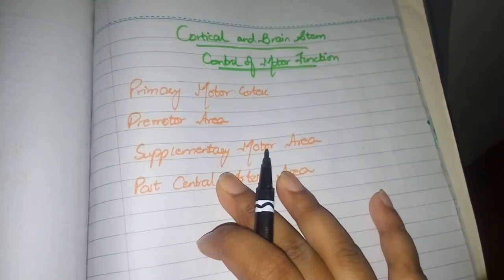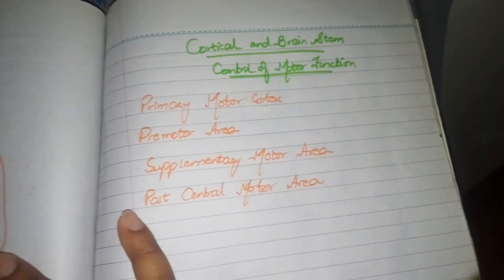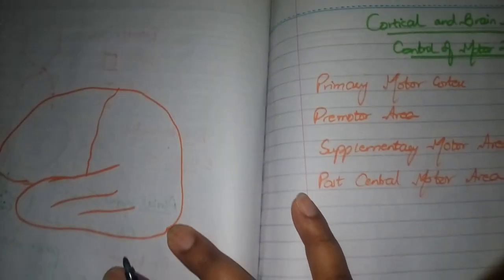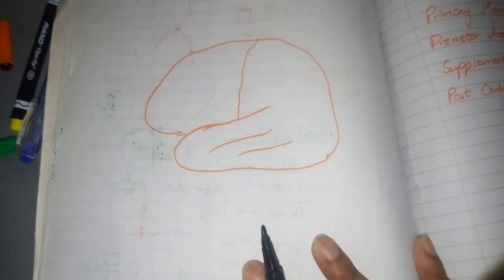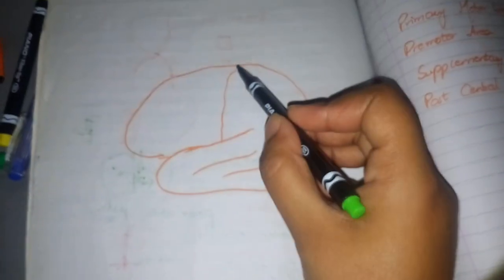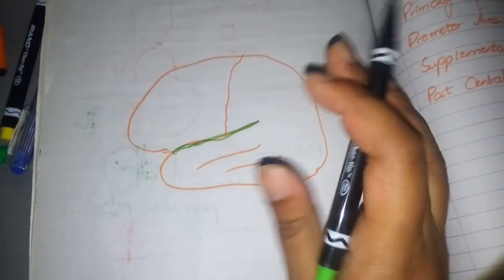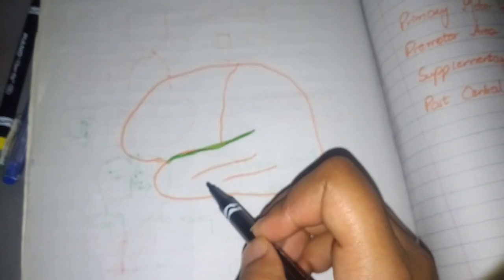Before starting, first of all we have some main anatomical issues. If you have studied brain anatomy then it will be very easy. This is a general structure. I have shown this brain from the lateral side. So you know we have this fissure we call lateral sulcus or Silvian fissure.